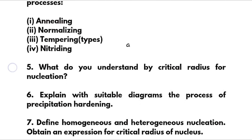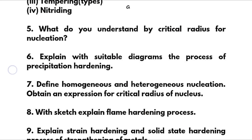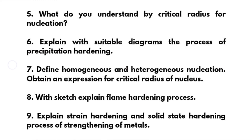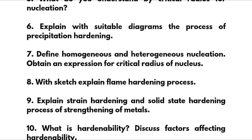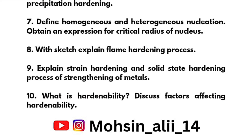Fifth: nitriding. Sixth: what do you understand by critical radius for nucleation — explain with suitable diagrams the process of precipitation hardening. Seventh: define homogeneous and heterogeneous nucleation; obtain an expression for critical radius of nucleus with a sketch. Eighth: explain flame hardening process. Ninth: explain strain hardening and solid-solution hardening processes for strengthening of metals. Tenth: what is hardenability — discuss factors affecting hardenability.